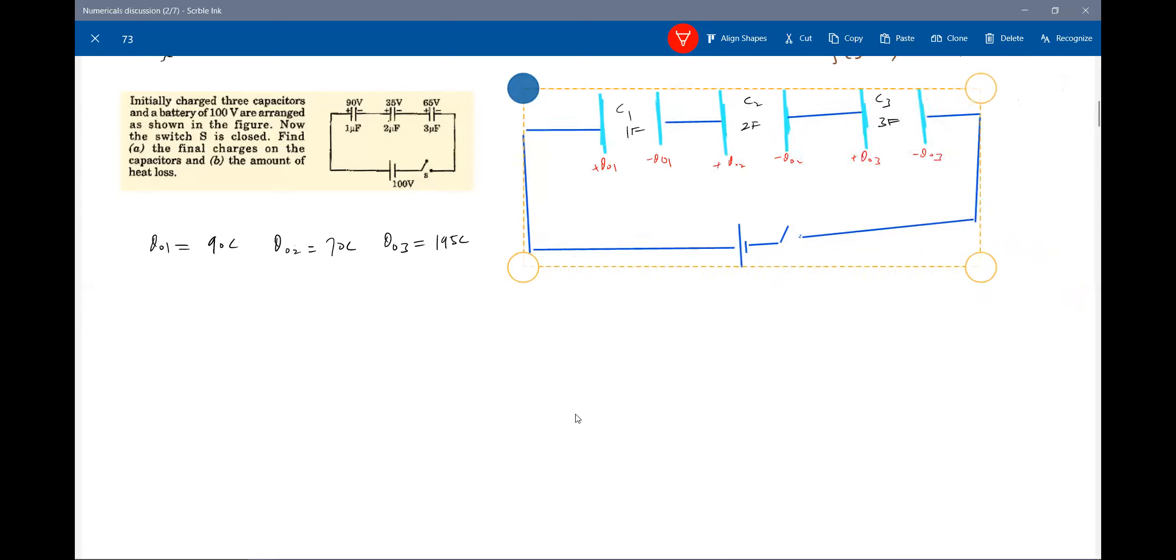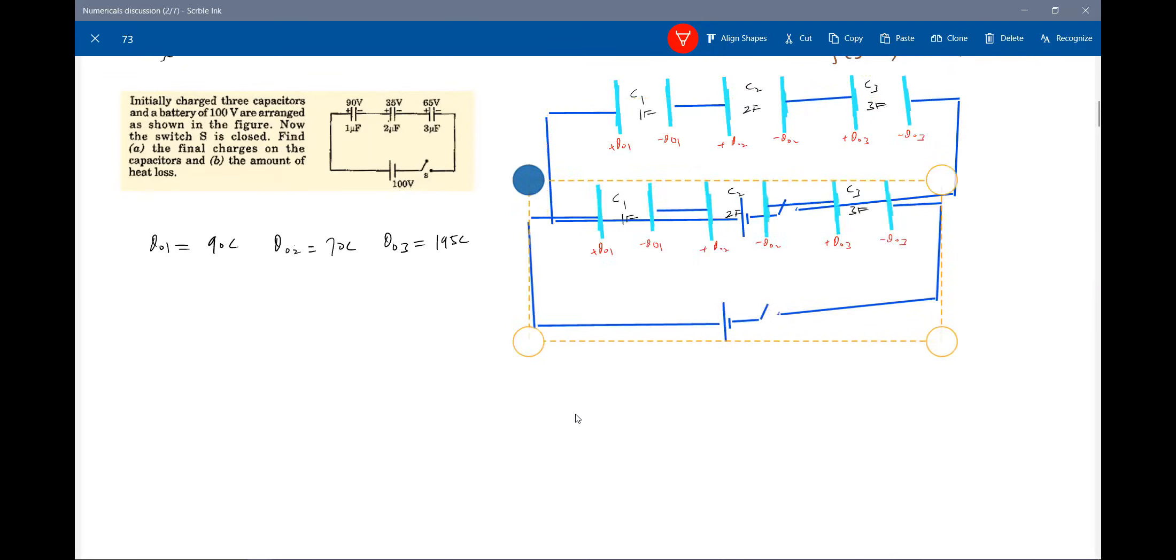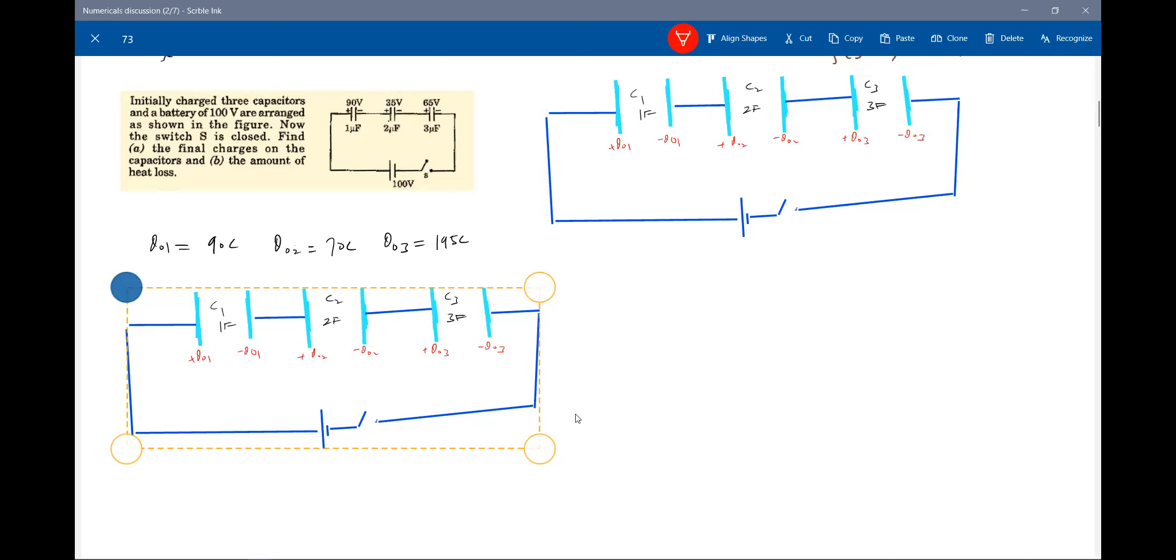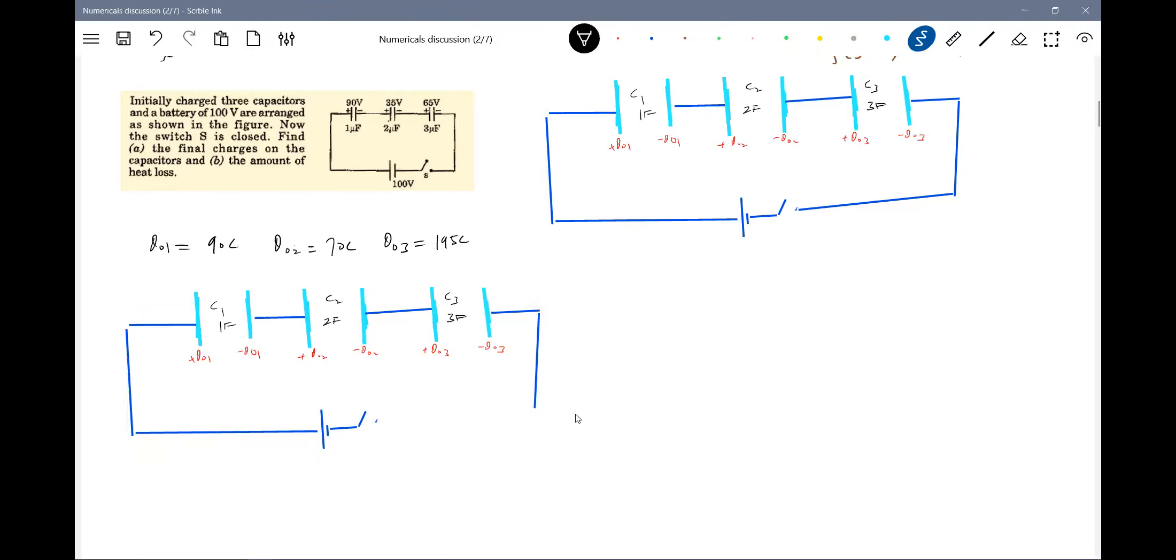Here in all this capacitor circuits, what is the basic method? Charge of a cell must be conserved in all that numerical. So what is the basic condition? It has to be satisfied. The charge of a cell must be conserved.